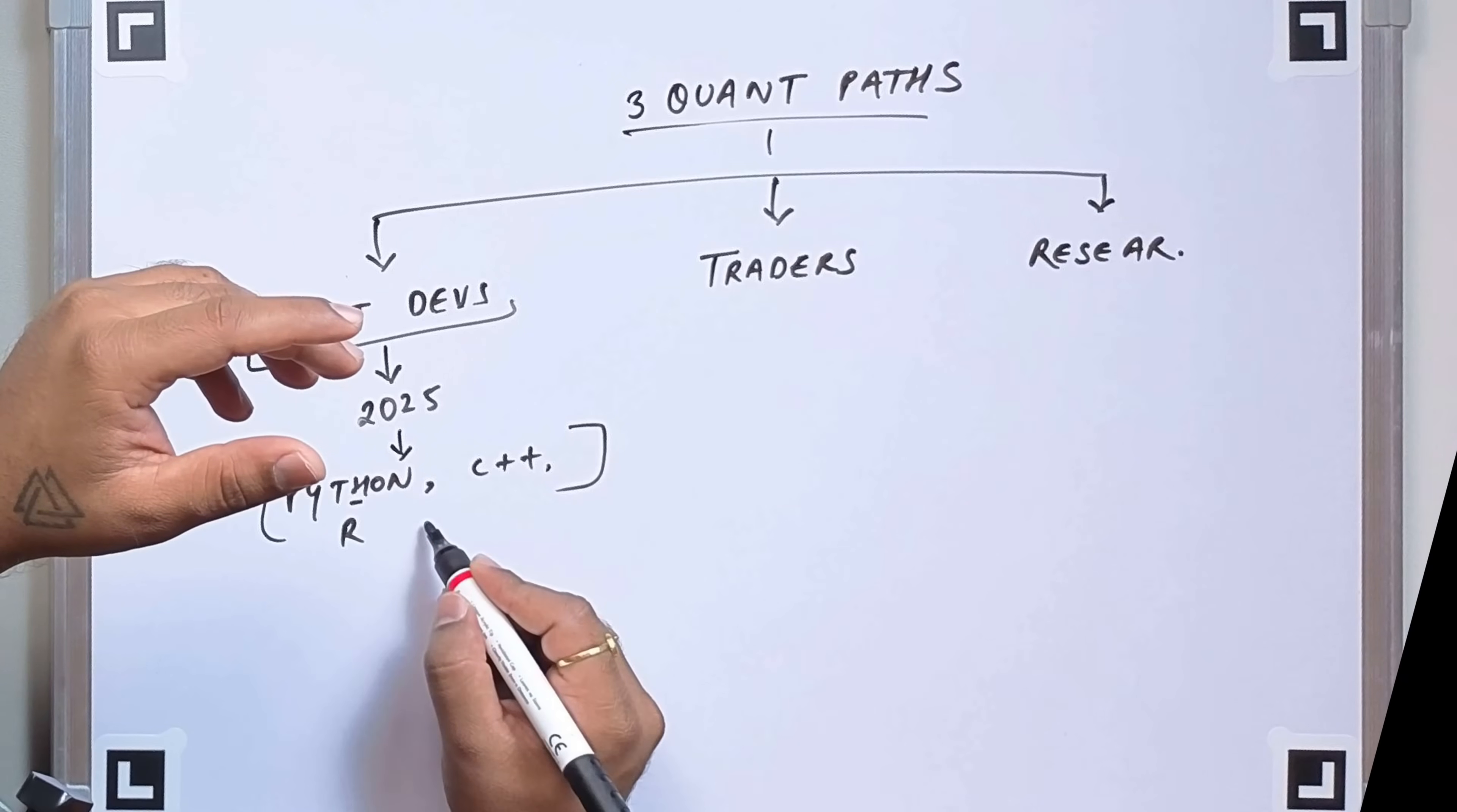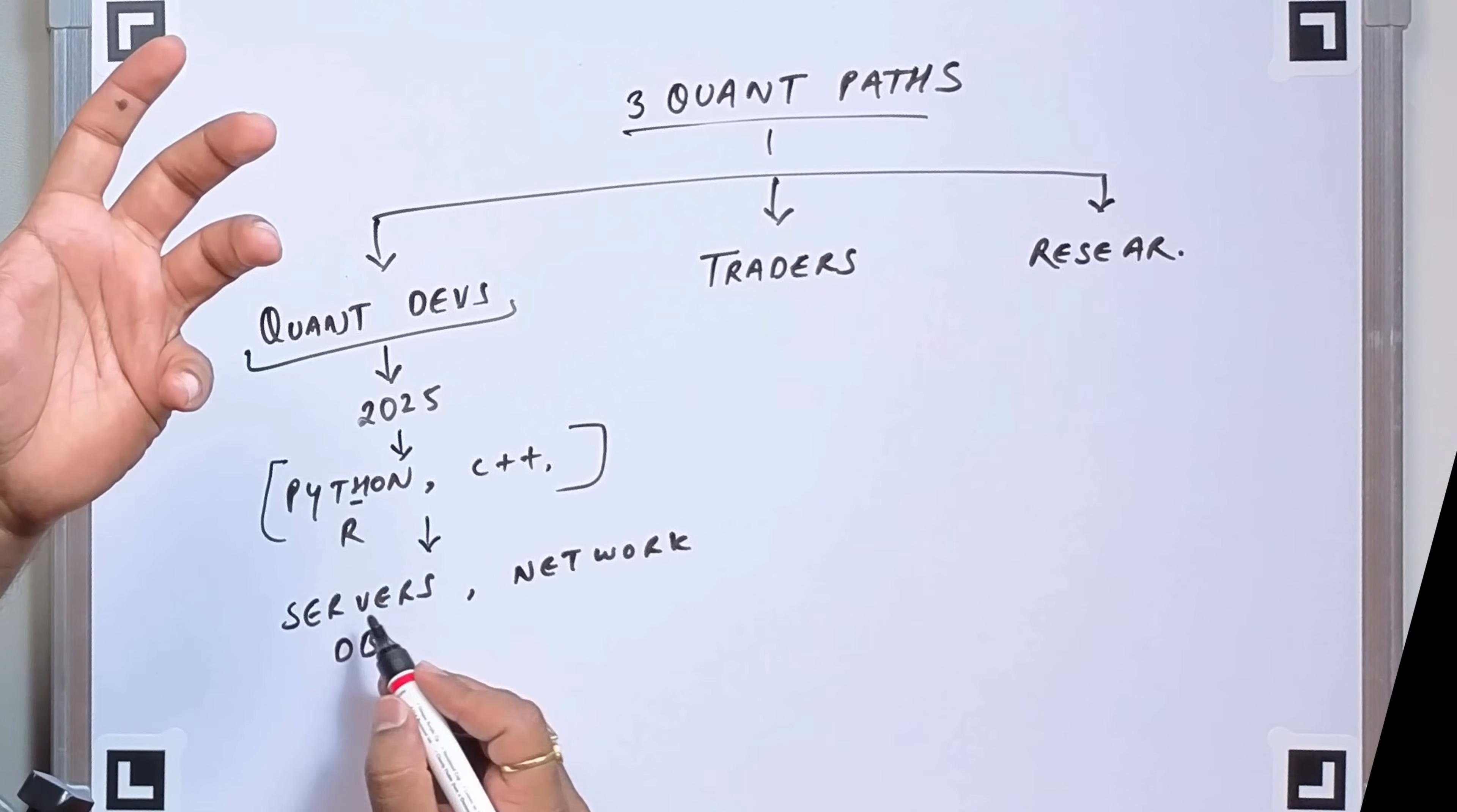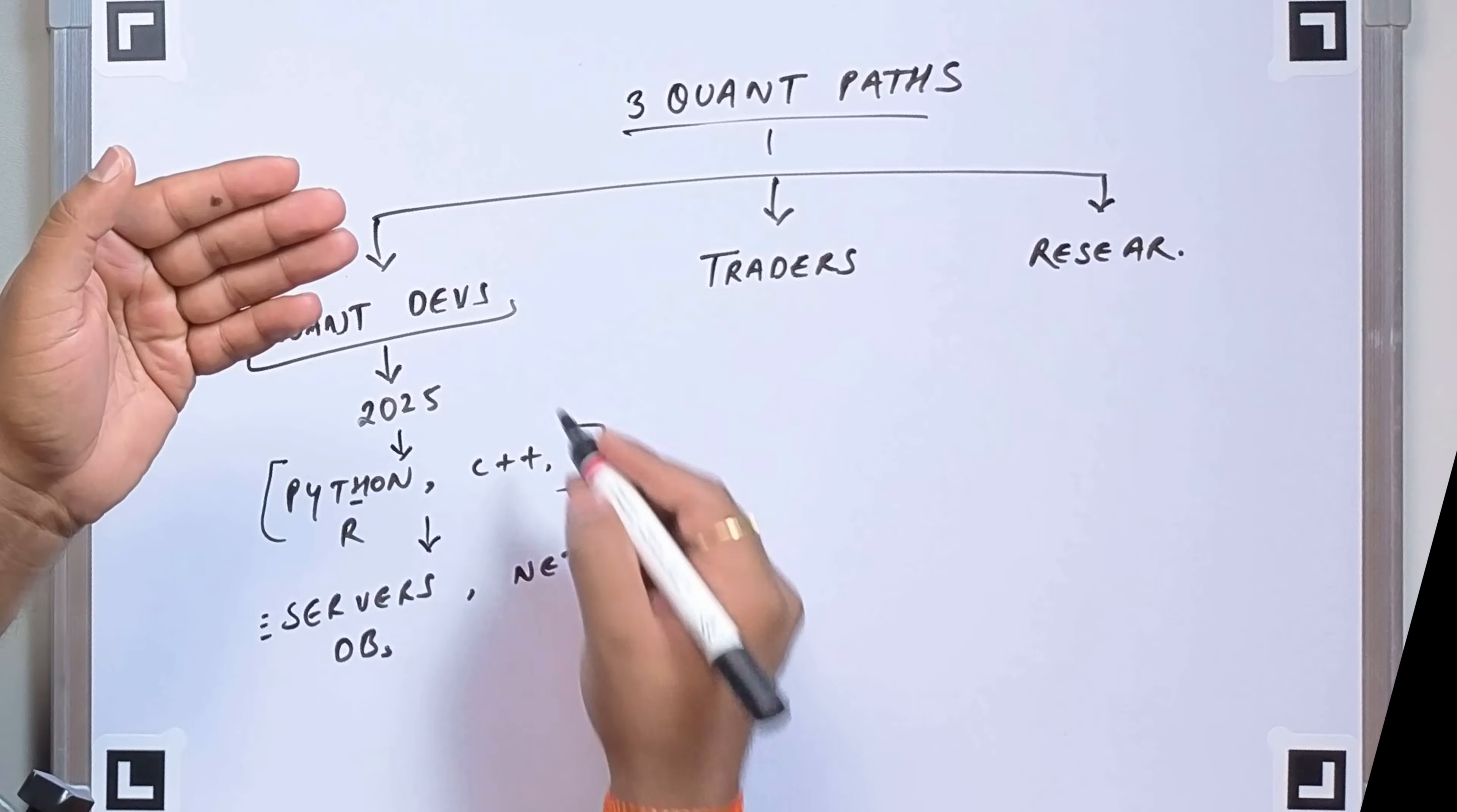Now in the quant devs, there can be multiple roles. The Python developer role, the C++ developer role, or even the operational engineers, the ones who manage the infrastructure of the company. In infra we have the systems, the servers, the network, and the databases. There are multiple roles in these also - the system admin, the Linux admin, the cloud admin. And when it comes to the network, it could have the network admins, those who manage the firewalls, and those who even lay the cables. So those are all included in the network engineers. And when it comes to the DB, these are the DBAs. We can divide quant devs into multiple roles, and there are multiple opportunities for every kind of IT field in this quant devs.